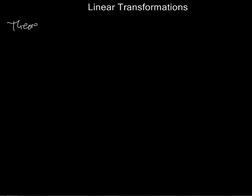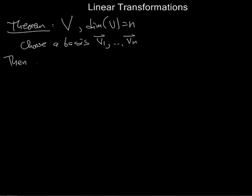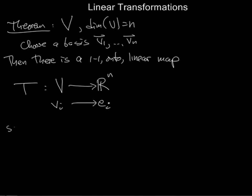This is sufficiently important that I want to say it as a theorem. Suppose V is a vector space and its dimension is n. Let's choose a basis V1 through Vn of this vector space. Then there is a 1-to-1 onto linear map or linear transformation T mapping V to R^n, and it's determined by saying that Vi goes to Ei. And we say that V is isomorphic to R^n. And that's just a fancy way of saying that we can really think of V as being R^n.